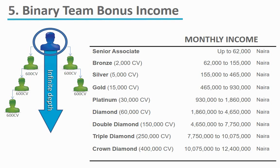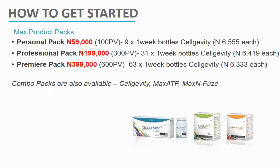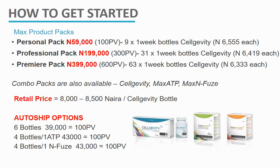You can also earn prime three bonuses and matching check bonuses, where you get a percentage of what your downlines are earning. To recap the product packs: the personal pack is 59,000 Naira and gives you 100 PV for nine bottles of SellGVT. The professional pack is 199,000 Naira, giving you 300 PV and 31 bottles. The premier pack is 399,000 Naira, giving you 600 PV and 63 bottles. You can also combine SellGVT with Max ATP and Max M-Fuse.